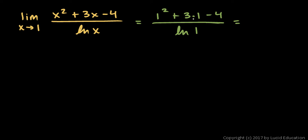This gives us 1 plus 3 minus 4, which is 0, over the natural log of 1, which is also 0. This is an example of what we call an indeterminate form. It's not indeterminate simply because we can't divide by 0 — it's important to know why we can't determine what the answer is. The answer could be 0, or it could be infinity, or it could be some finite value in between.